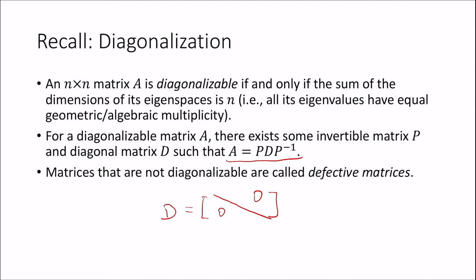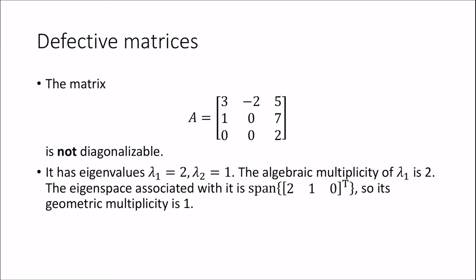But there do exist some matrices that are not diagonalizable. We call them defective matrices. For example, here we have a matrix A. It's not diagonalizable because there is an eigenvalue lambda 1 equals 2. Its algebraic multiplicity is 2, you can verify that. But its geometric multiplicity is 1.